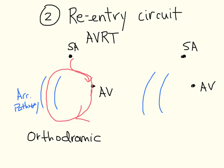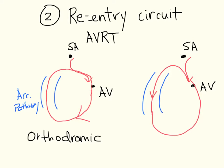The other, much less common form involves the SA node sending an impulse down to the AV node, but instead of going through the AV node, the circuit goes through the accessory pathway and then goes up the AV node, forming that kind of circuit. That is called antidromic conduction.